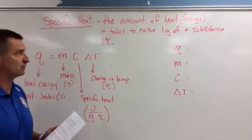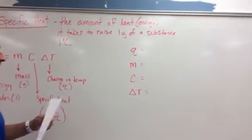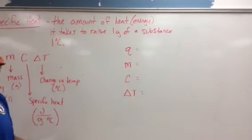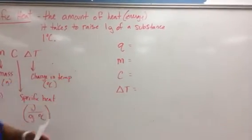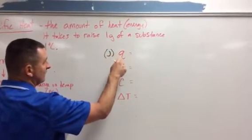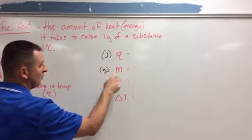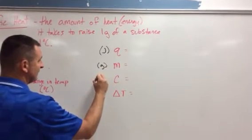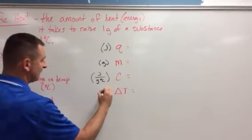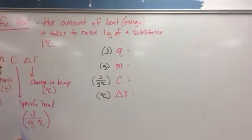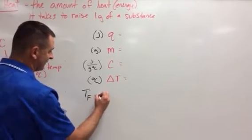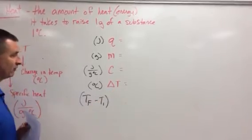We're going to go over a couple practice problems. You always need to make a formula tree so you know what you're given, and you can identify values by comparing units. If I'm given joules, I know that's my Q. If I'm given grams, that's my mass. If I'm given joules per gram degree Celsius, that's my specific heat. And if I'm given degrees Celsius, that's my change in temperature — final temperature minus initial temperature.